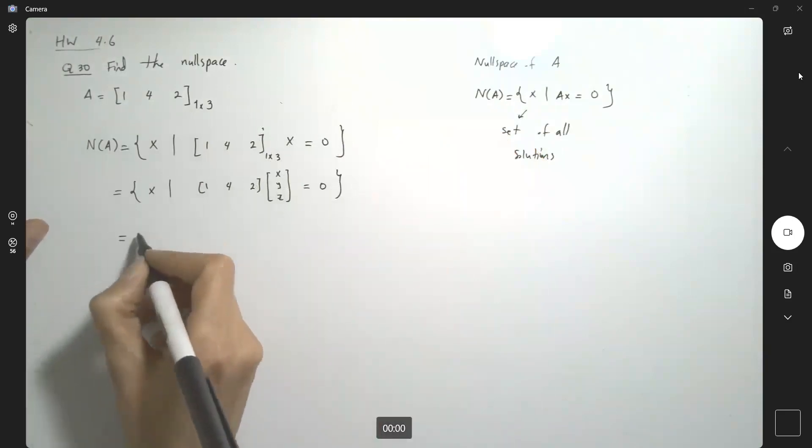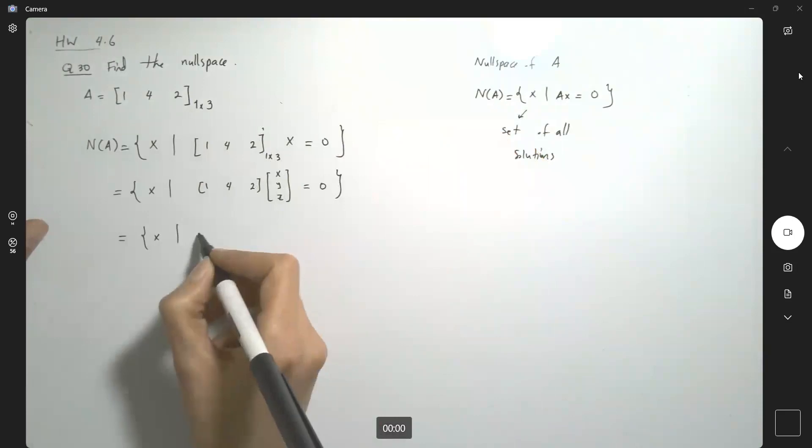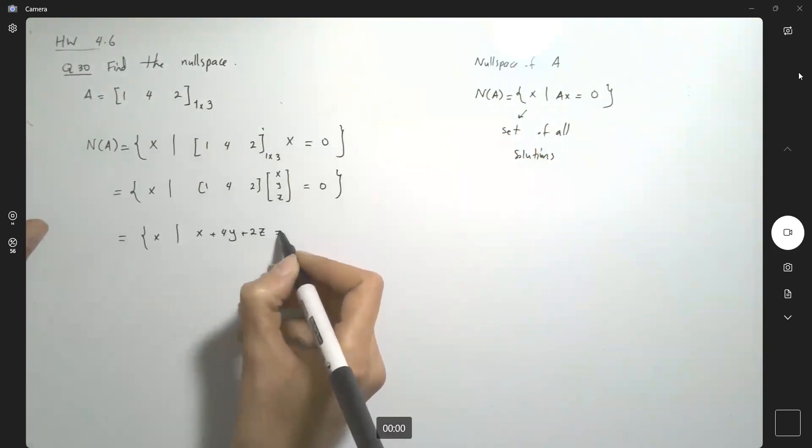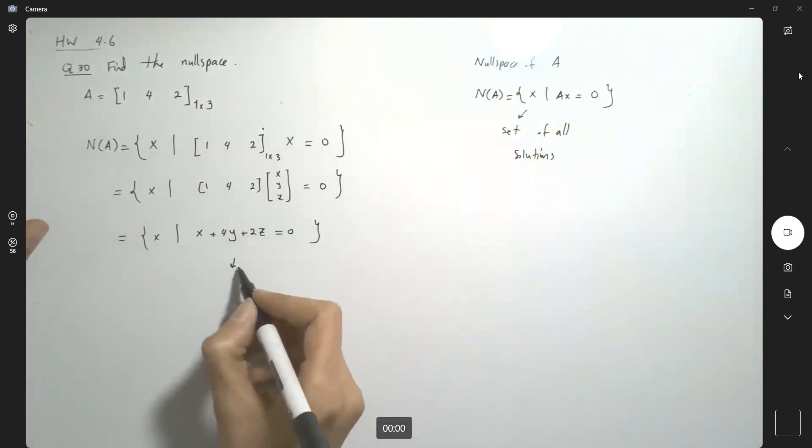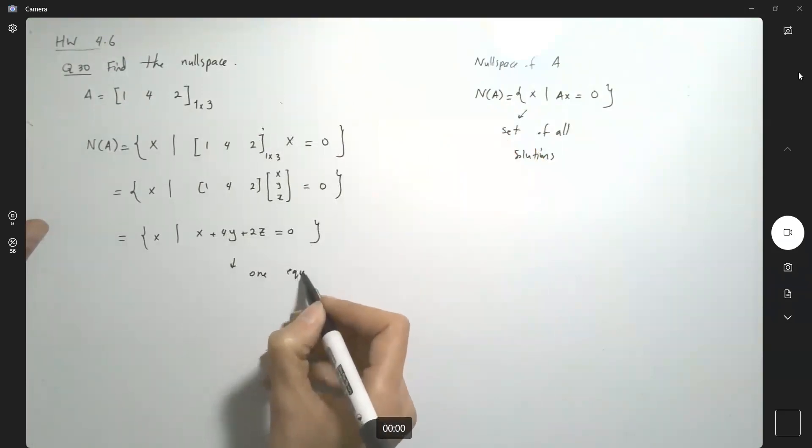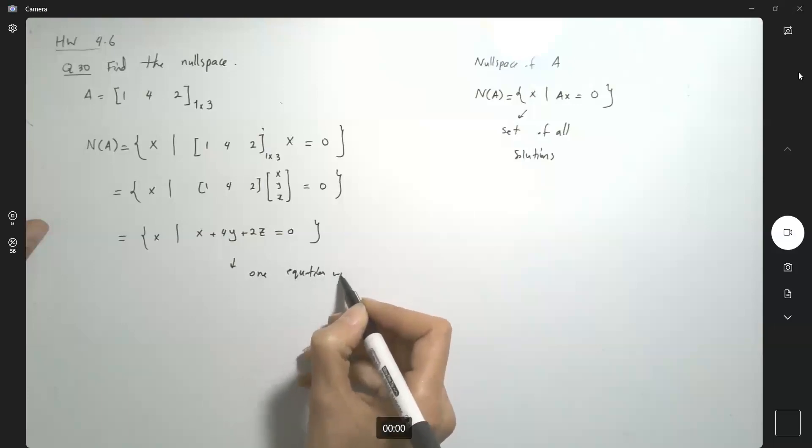So let's solve this. It's not that difficult to solve. x plus 4y plus 2z equals zero. You have one equation with three variables, so we need to define two parameters.